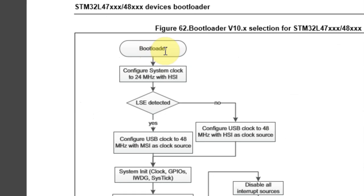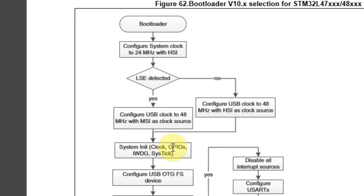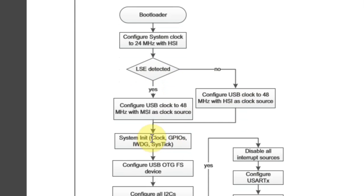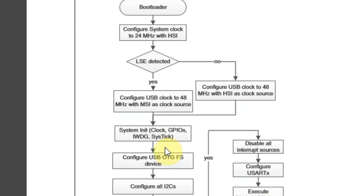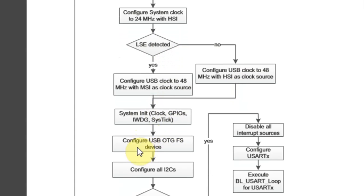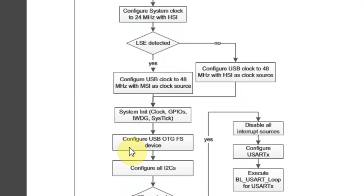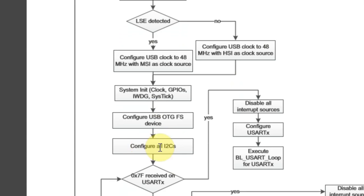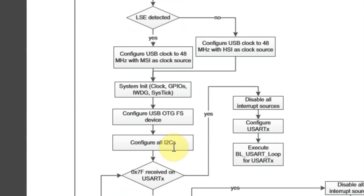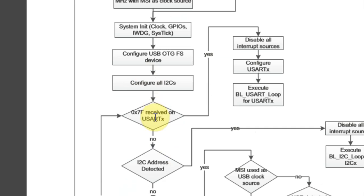Coming to the bootloader execution: we configure the system clock to 24 MHz with HSI. If there is LSE detected or there isn't one, the system initializes all the GPIOs, clocks, and everything. It configures the USB, configures all I2C, and after the configuration, this is the bootloader sequence.